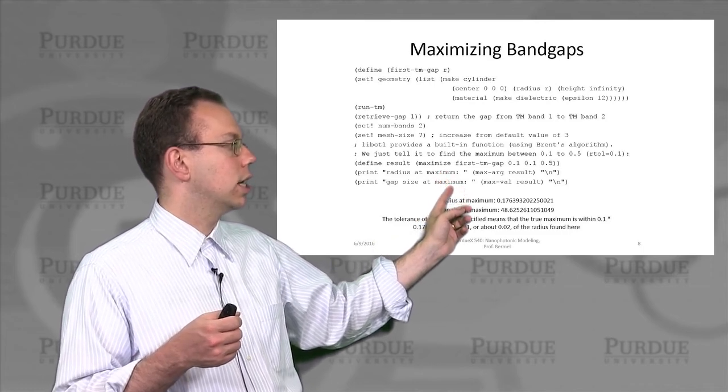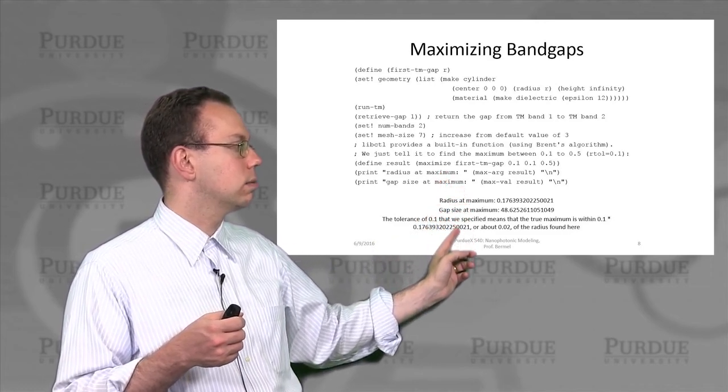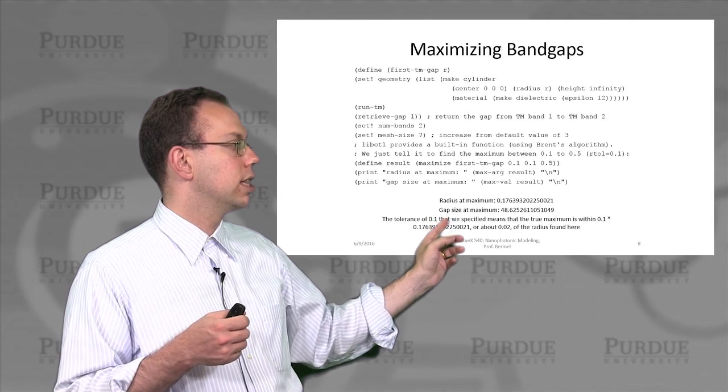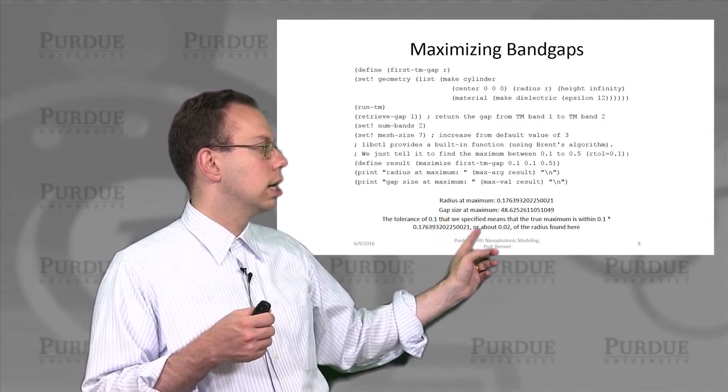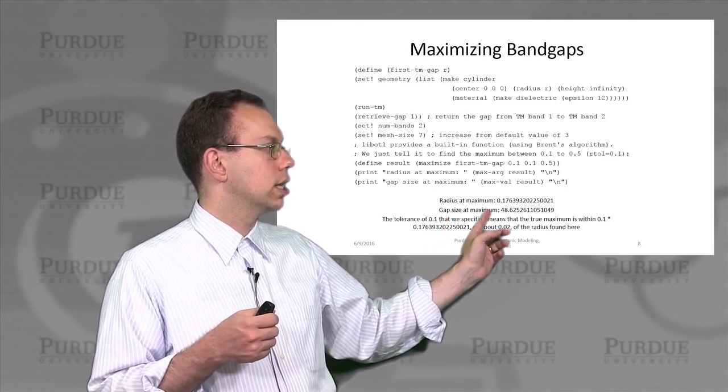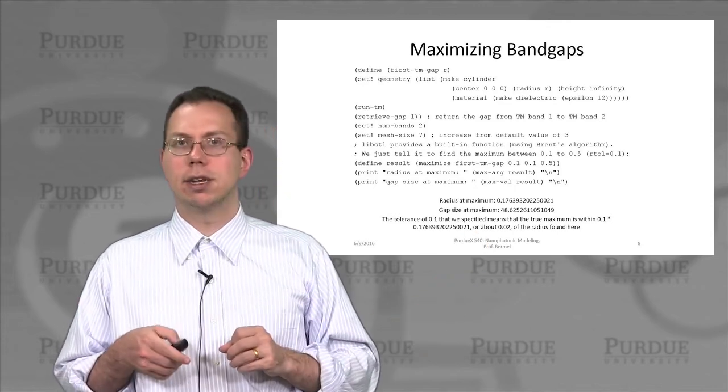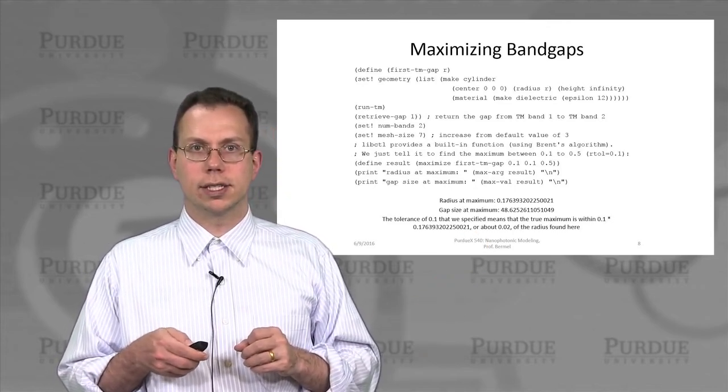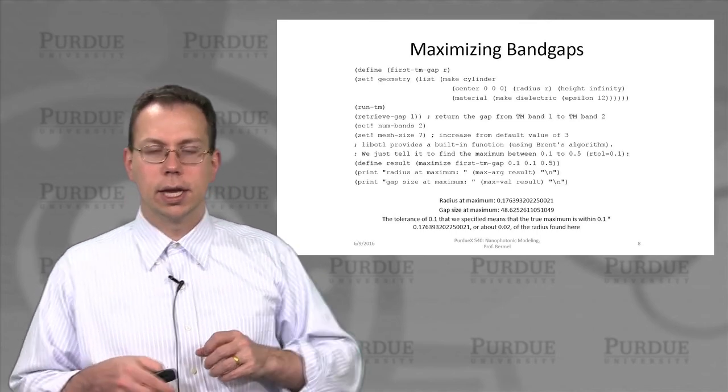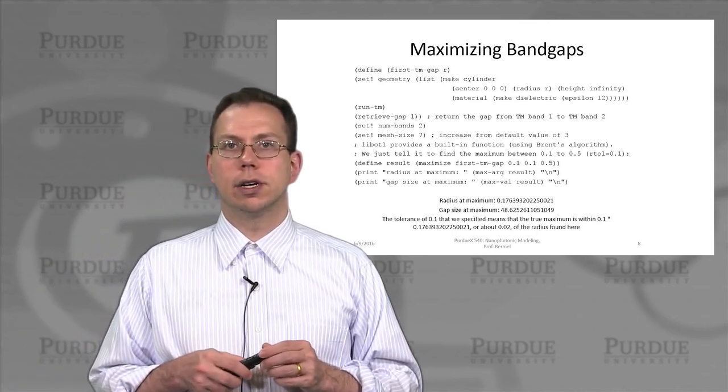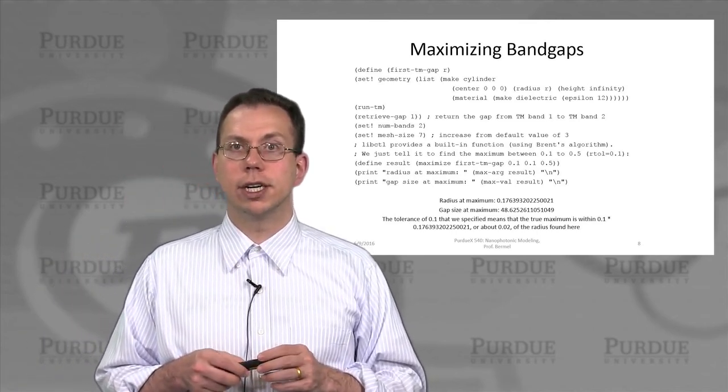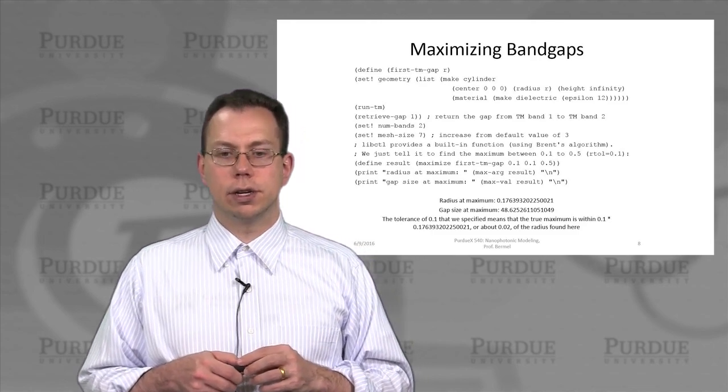And then we could actually output the maximum gap. And then you can find that the true maximum would actually give us a much larger gap size and a different radius than we calculated earlier. So that's a nice demonstration of how it works. And so in the next lecture, we'll actually talk more details about what else we can do with MPB. Thank you.